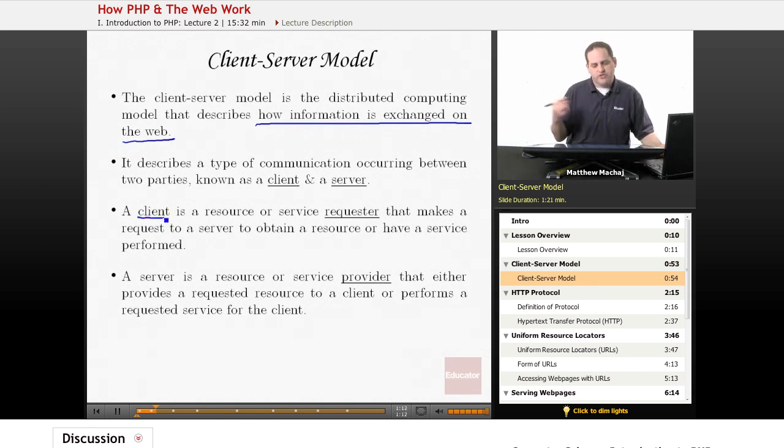Basically, a client is what's known as a resource or service requester, and a client makes a request to a server to obtain a resource or to have a particular service performed. On the other side of things, a server is a resource or service provider that either provides a requested resource to a client or performs a service requested by the client.